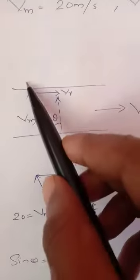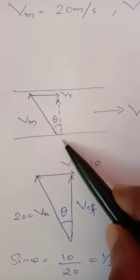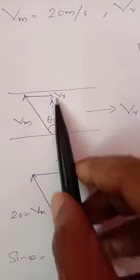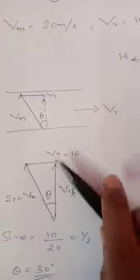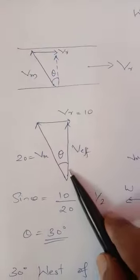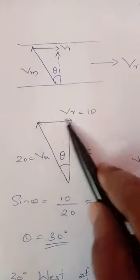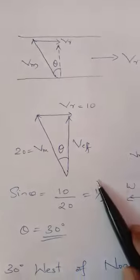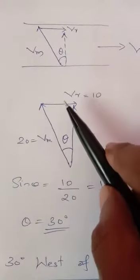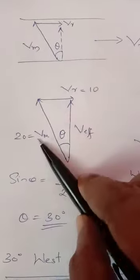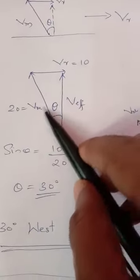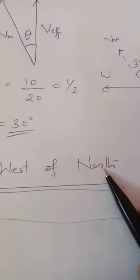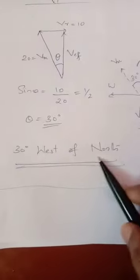So the triangle you can see that, sin theta opposite side by hypotenuse, you are getting theta equal to 30 degrees. And this direction is north, 30 degrees west. Therefore I can write 30 degrees west of north.